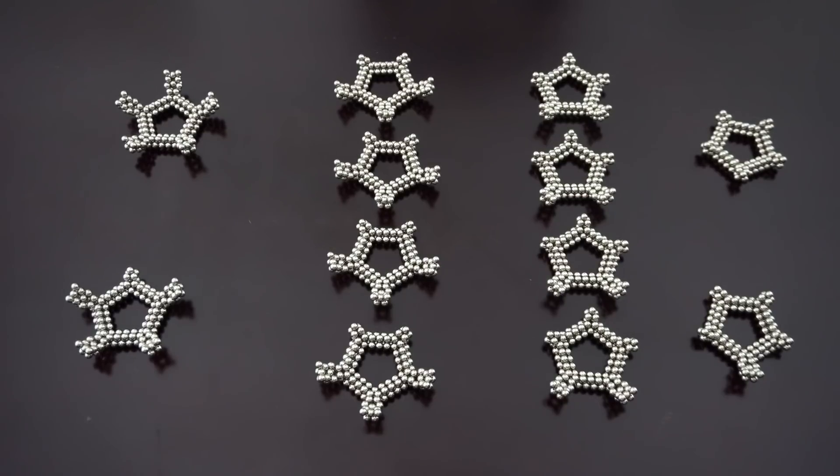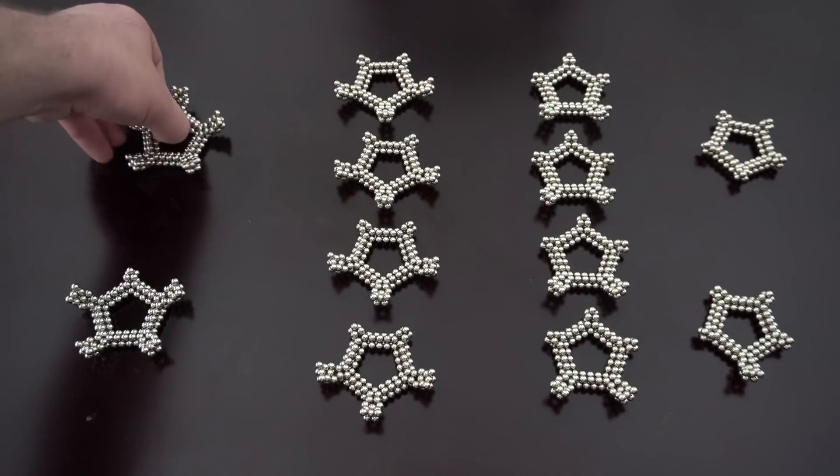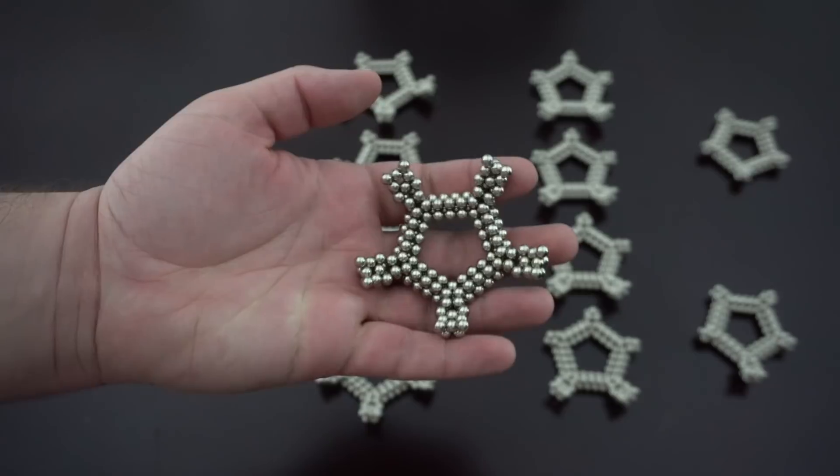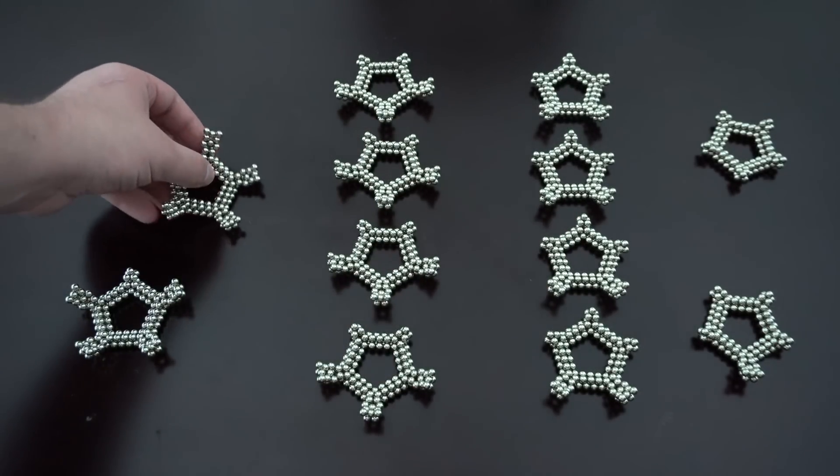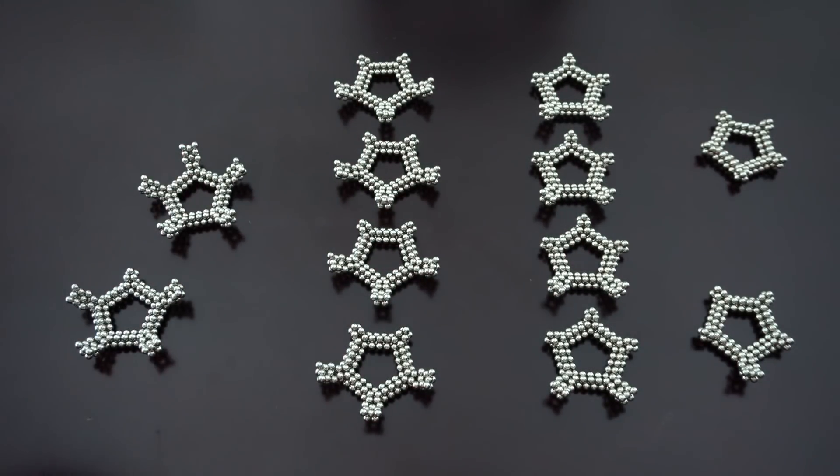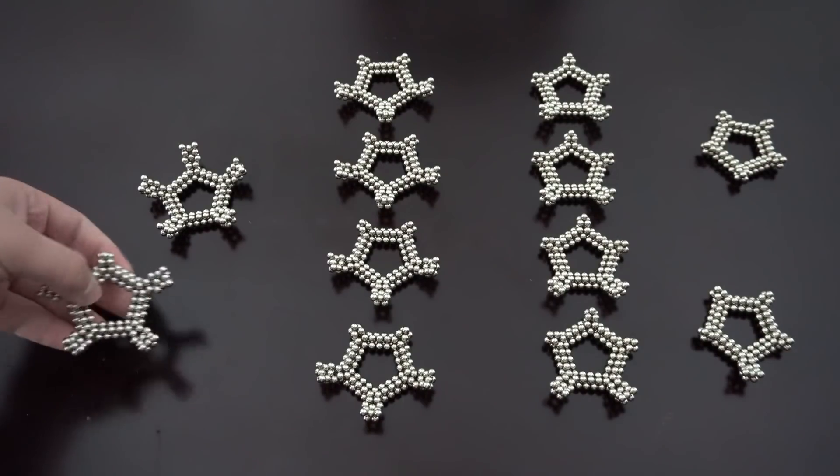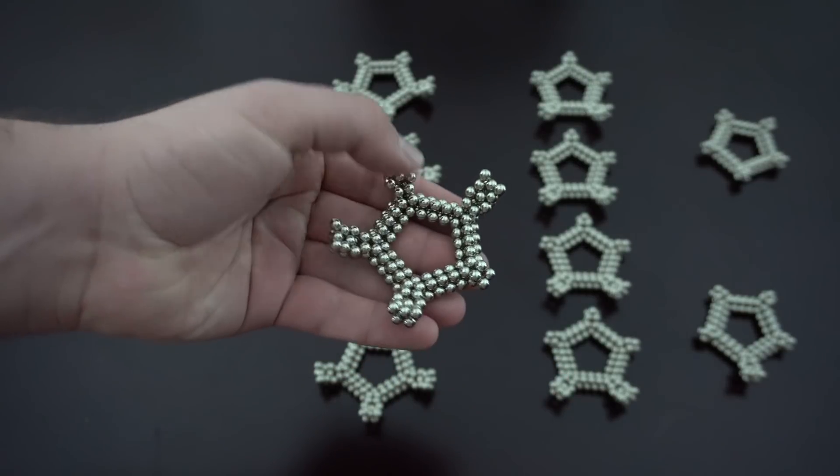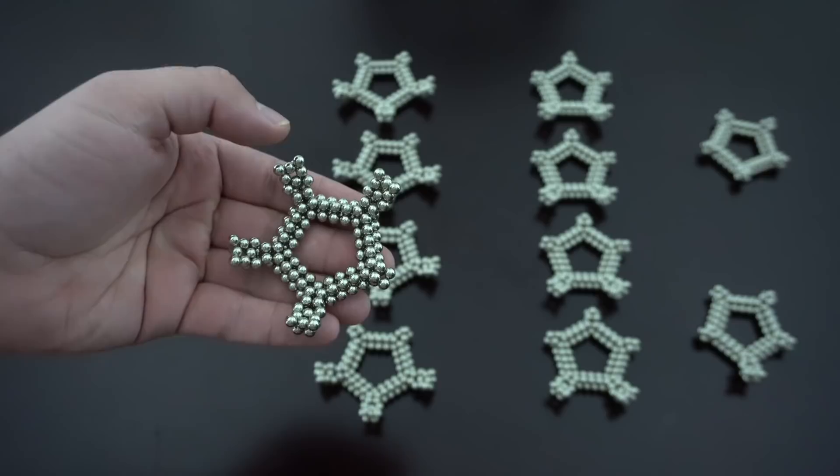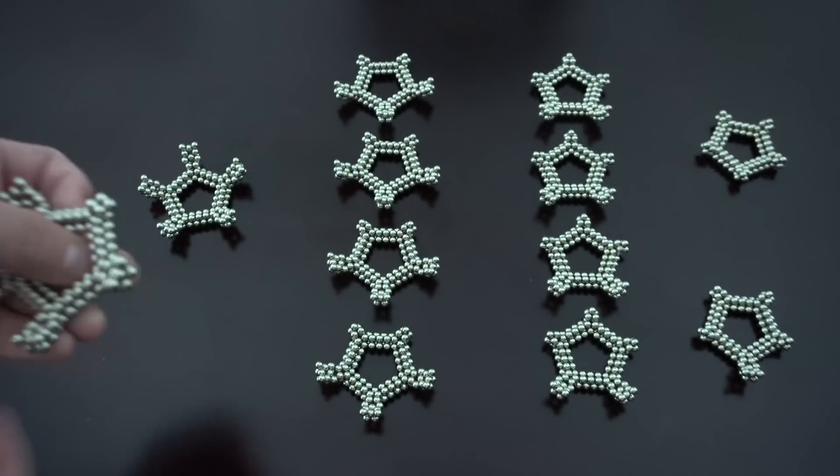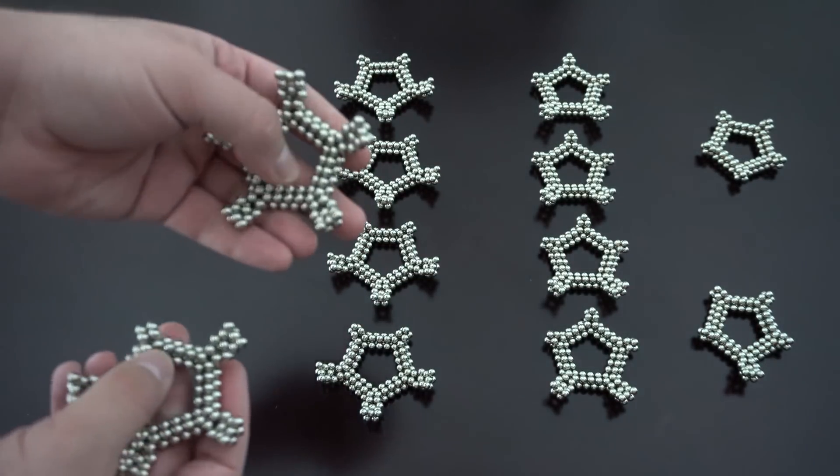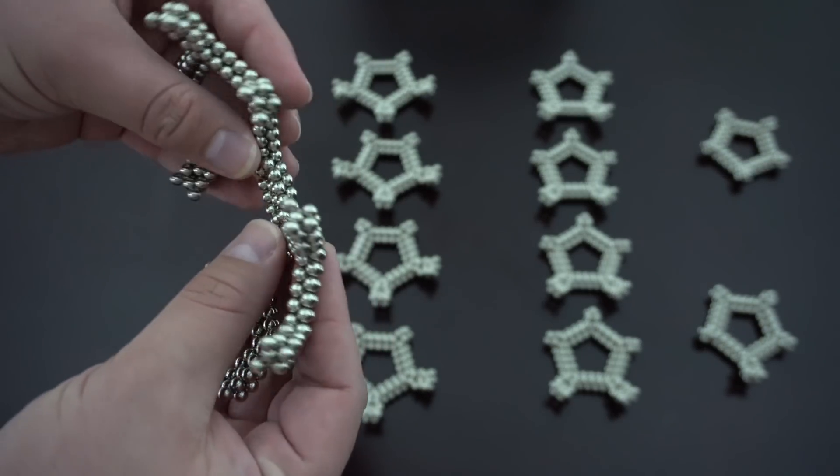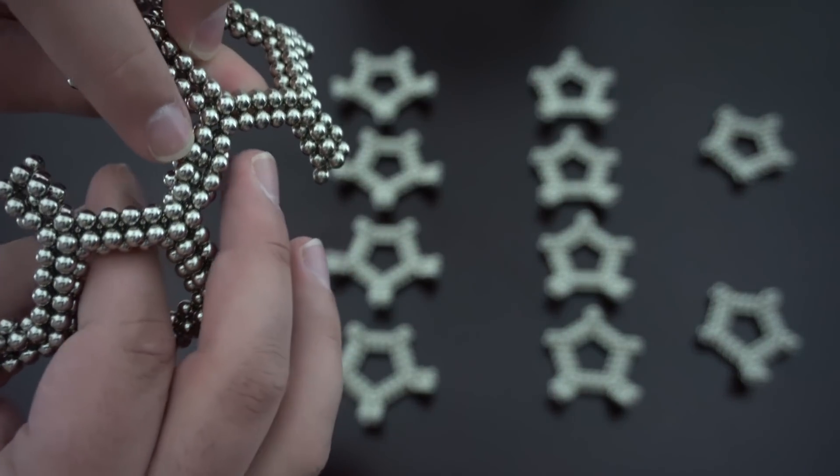From here we want to begin with the final assembly. We start with this one with all five attached. This is going to be the bottom of the shape, at least while we're building it. Once we're done, you can put it on whichever face you want. From here you take the one with four and remove the extra magnet on the one leg that doesn't have anything on it already. This will attach to any one of these just like that.